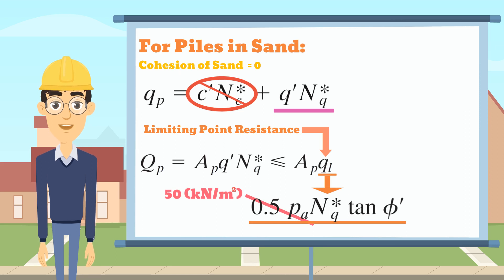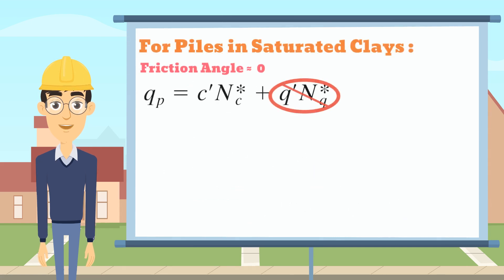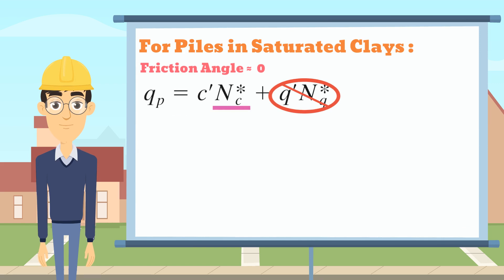For the pile in saturated clay under undrained conditions, the value of Nq can also be negligible since the friction angle is very small. According to this table, we can get the value of Nc factor is equal to 9. Therefore, we can finally get this formula.